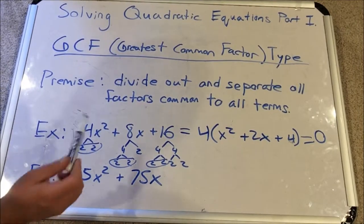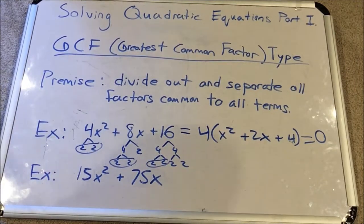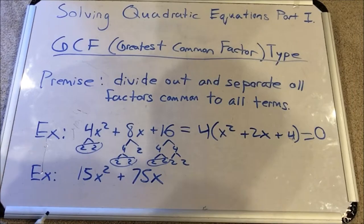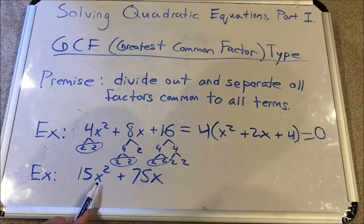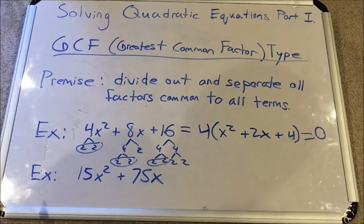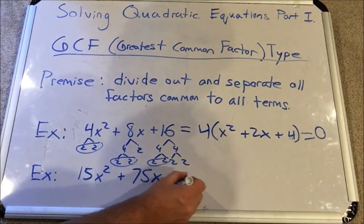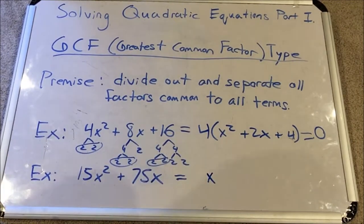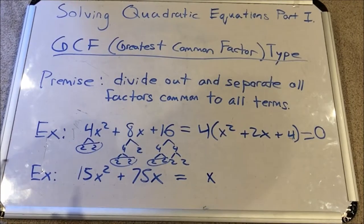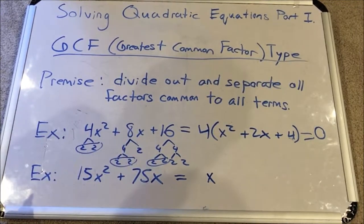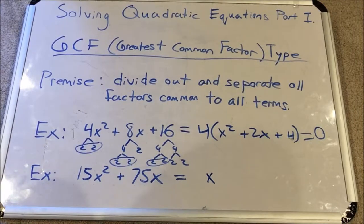Now let's look at the second example, which is not a trinomial with three terms — it's a binomial with two terms: 15x squared plus 75x. Let's look at all the common factors. For the variables, x squared and x each have at least one x as a factor, so we can pull that out. Now look at the numbers: 15 and 75. Is 75 a multiple of 15? Yes, 75 is 15 times 5, so we can pull out 15x as the greatest common factor by division.